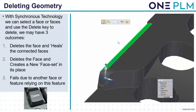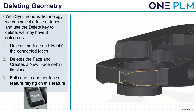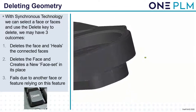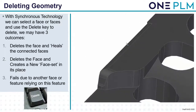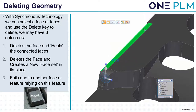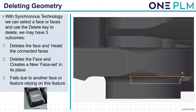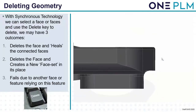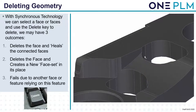Deleting geometry is something people quite often overlook — there are big strengths here in synchronous. In ordered you'd have to select the geometry and specify where you want to delete to. With synchronous technology we can select a face or multiple faces and use the delete key. There are three possible outcomes: delete the faces and heal the connected faces, delete the faces and create a new face set in their place, or fail because other faces rely on this feature. In a complex example it's quite easy to fence-select the entire area and delete, and it correctly deletes all those faces, extending the remaining faces to where they need to be.